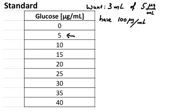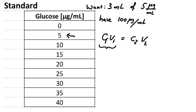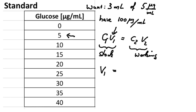We want 3 milliliters of a 5 microgram per milliliter solution — that's our first data point — and we have a 100 microgram per milliliter stock solution. What we can do is use our trusted equation C1·V1 = C2·V2, where everything on the left relates to the stock solution and the right side gives us the working solution. We rearrange that because we are looking for the volume of the stock solution, so V1 equals C2·V2 divided by C1.